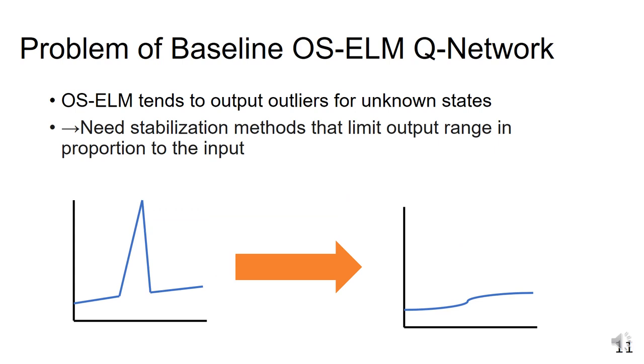Here, let me mention the problem with the baseline OS-ELM Q-Network. That is, OS-ELM tends to output outliers for unknown states, and this value may hinder learning. These outliers may be generated even with slight changes in the input. Thus, it is essential to suppress such outliers in order to stabilize the OS-ELM Q-Network.